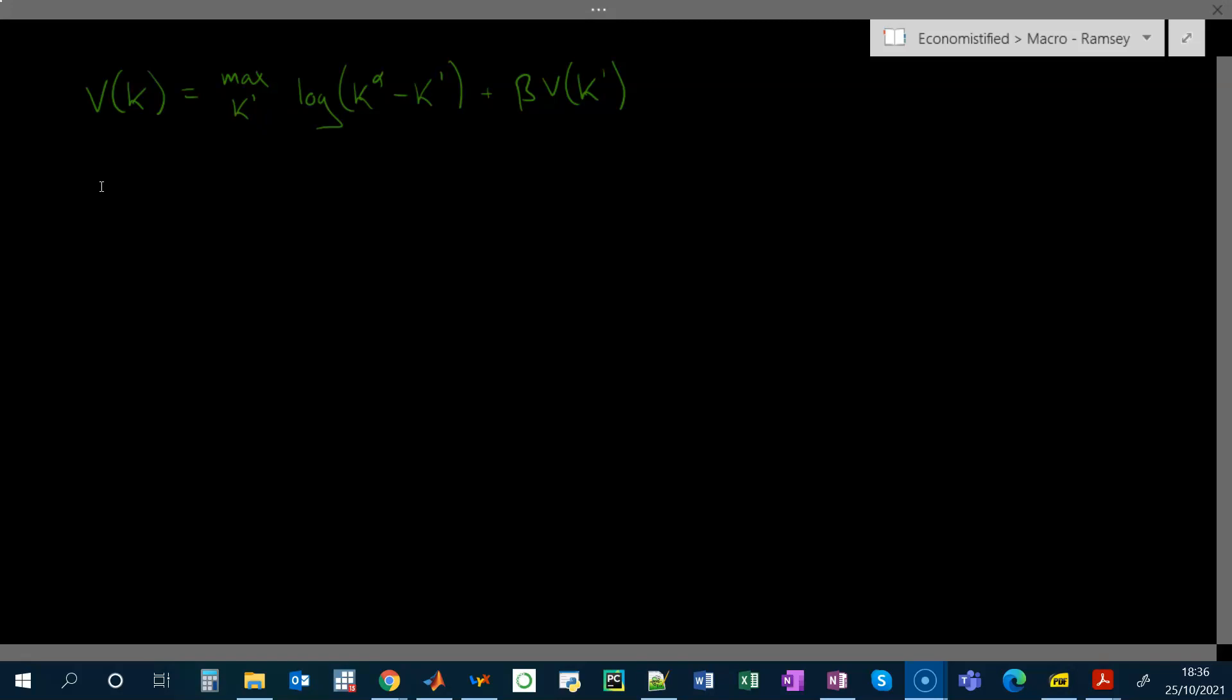And the Bellman equation has a nice property that it is what's called a contraction mapping, which means that if you plug in some guess for the value function on the right hand side, what you'll get out after applying the Bellman operator is another guess for the value function that is closer to the true value than your initial guess.